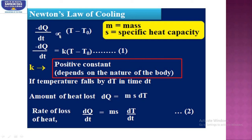When removing the proportionality sign in the first equation and making it equal, we multiply with the constant k, which is a positive constant that depends on the nature of the body. Now we will go with the problems.